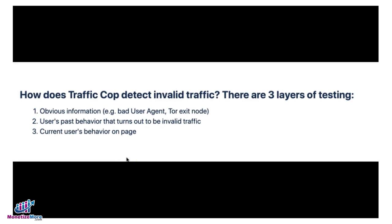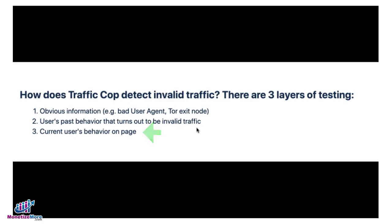TrafficCup runs three layers of testing. One, obvious information. Two, the user's past behavior that turns out to be invalid traffic. And three, the current user's behavior on page.